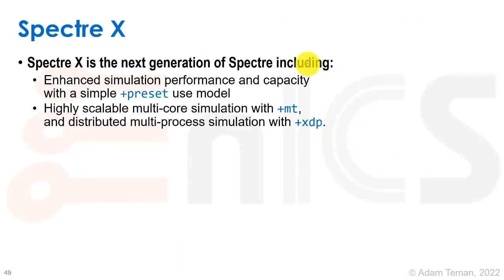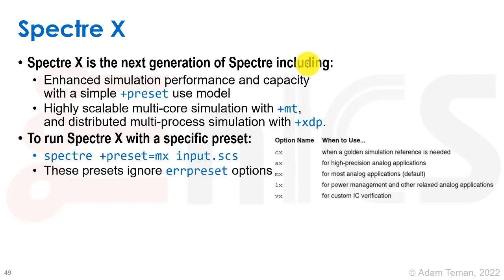Spectre-X is the next generation of Spectre. It includes enhanced simulation performance and capacity with a simple +preset model. It's highly scalable for multicore simulation with +MT, and supports distributed multiprocess simulation with +XDP. The presets are done as Spectre +preset equals one of these options: CX, AX, MX, LX, and VX, with different trade-offs for each.